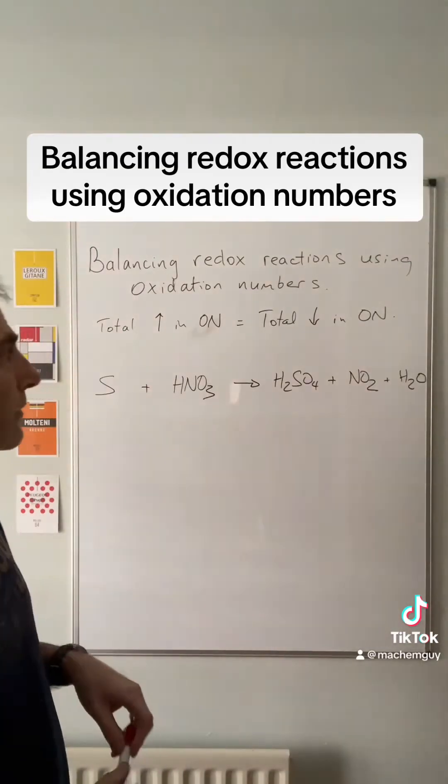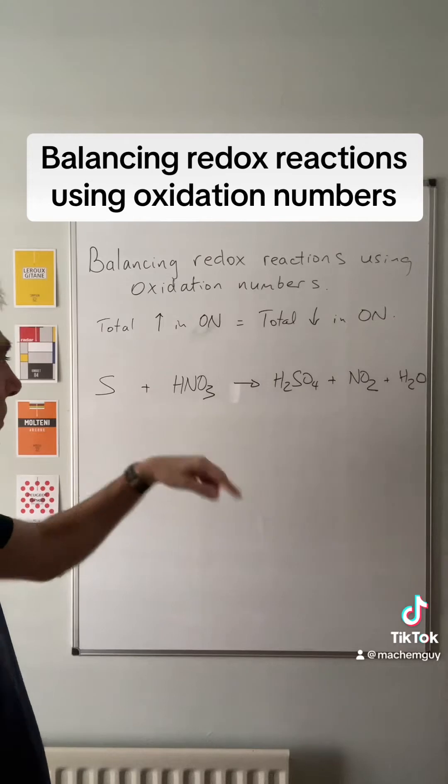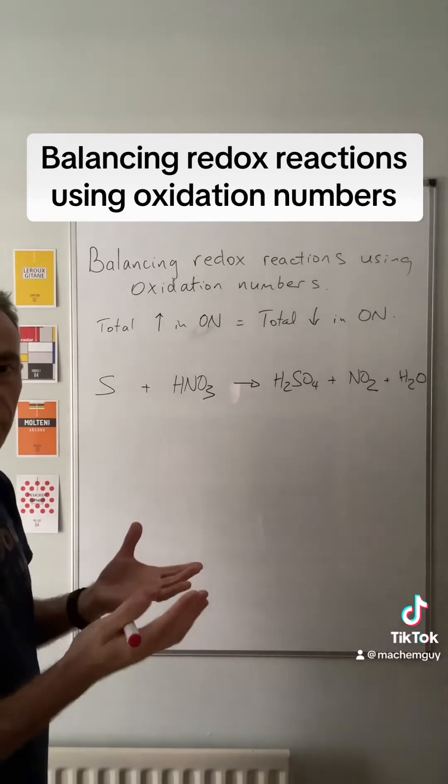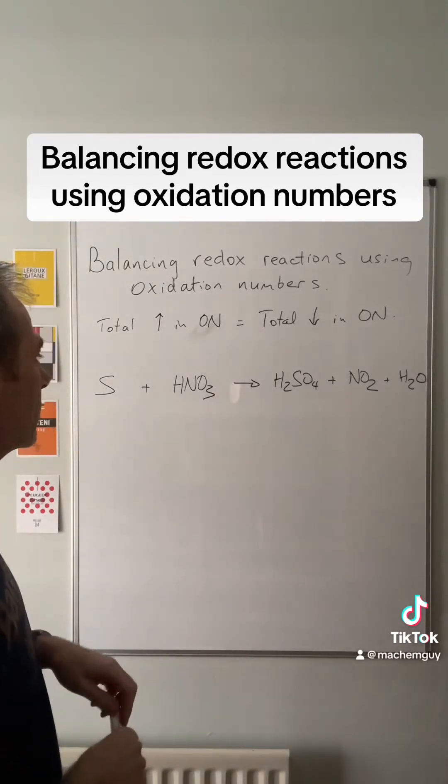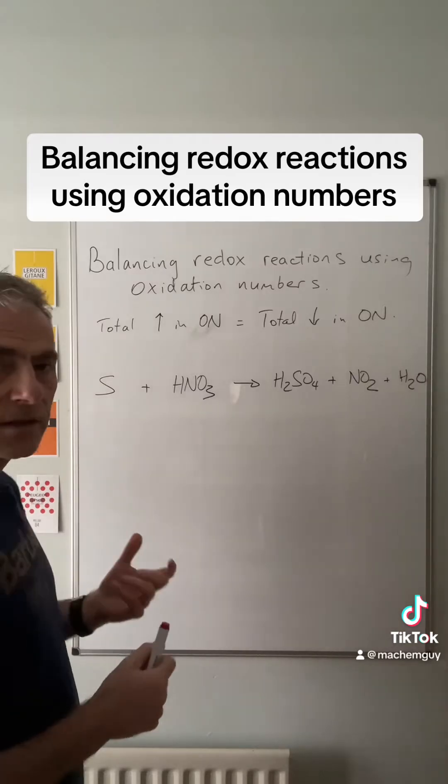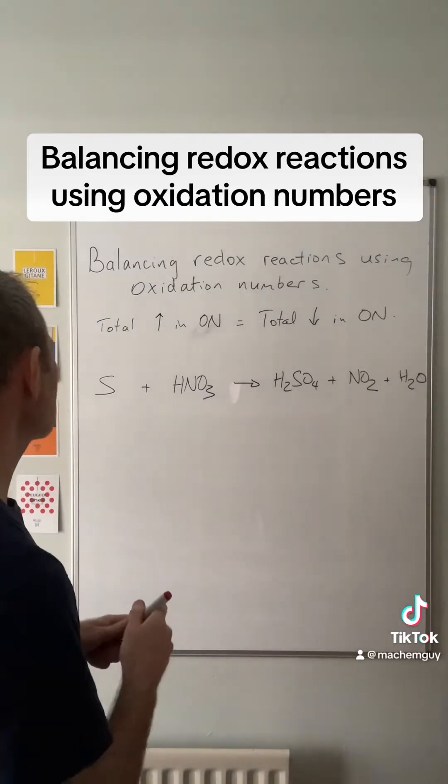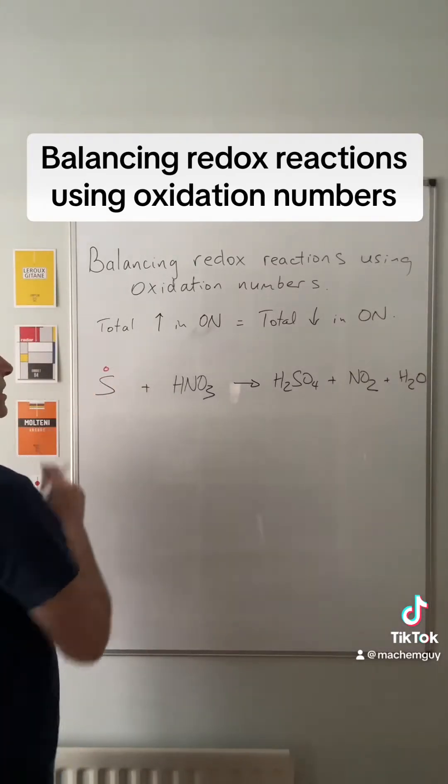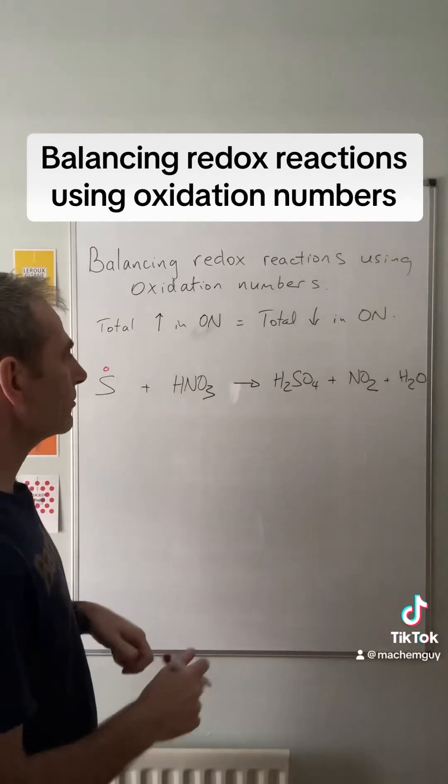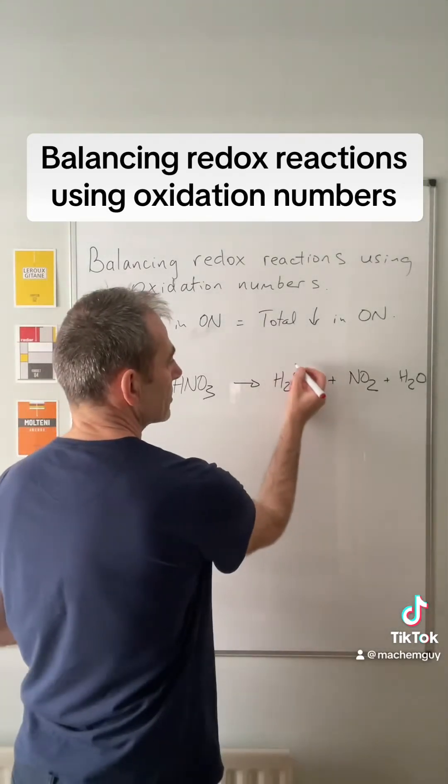I've got three of these altogether for the video. There's the first one, so basically we're going to use oxidation numbers to balance this equation. The first thing we need to do is look at the oxidation number changes. We'll start with the sulfur: in its element form it is zero, whereas in H2SO4 it's plus six.